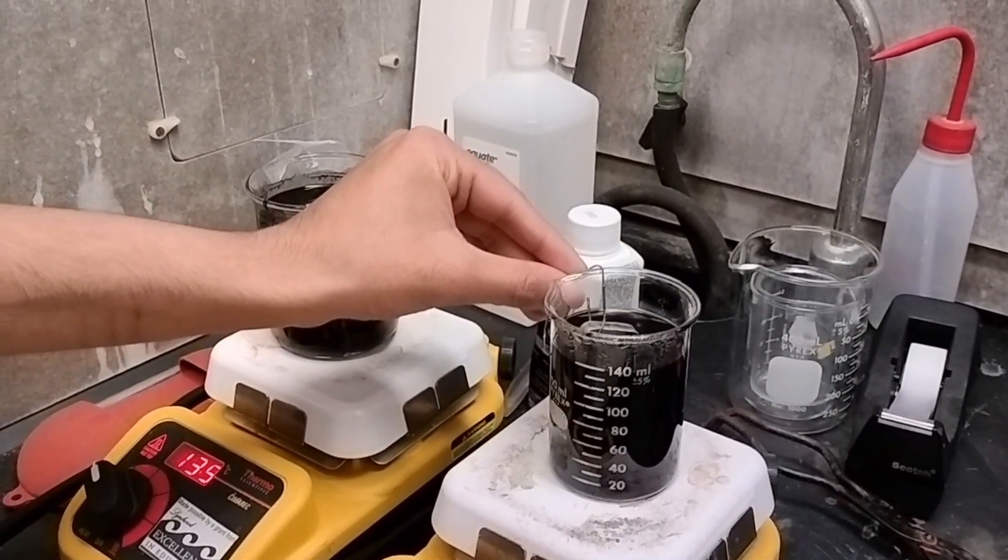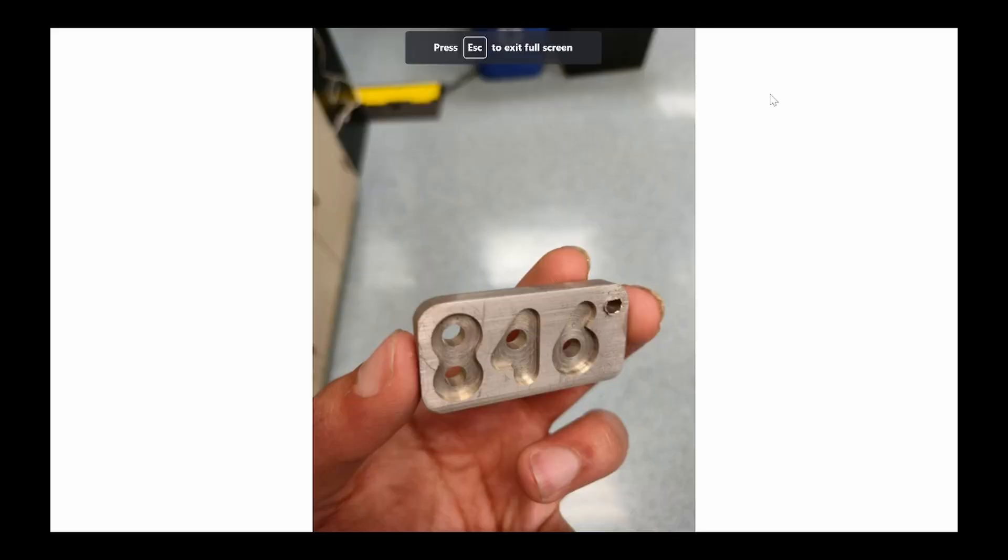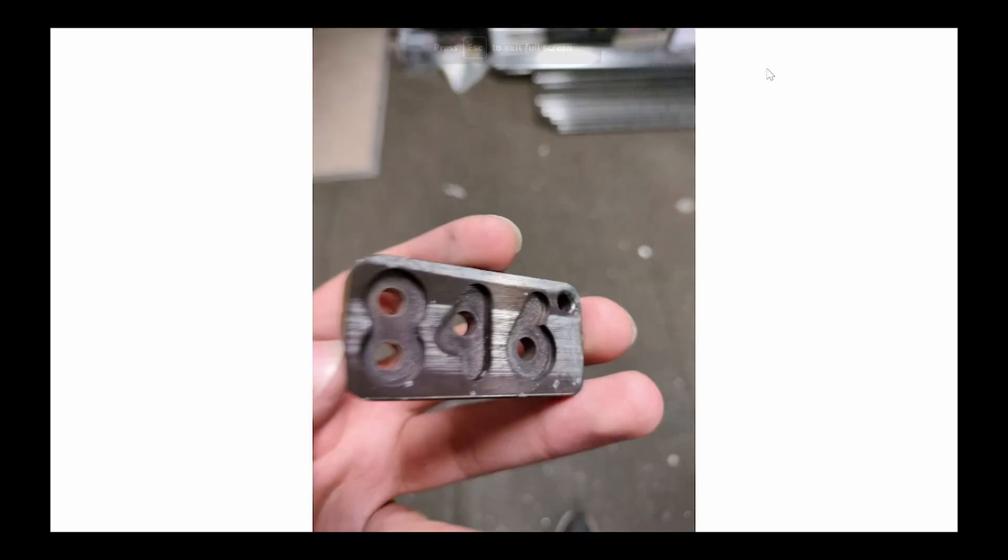After about 15 minutes, the part is done anodizing. Here is the part before it went through the anodization process. And here is the part now. As you can see, there are some imperfections in the finish. The bubbles are there because I left the part in boiling water for too long.